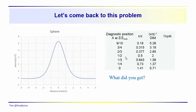These are the diagnostic positions, the values of x over z, and the depth index multipliers. We showed you how to get these. We'll come back and recap computation of x over z. But first, what did you get for the depth?